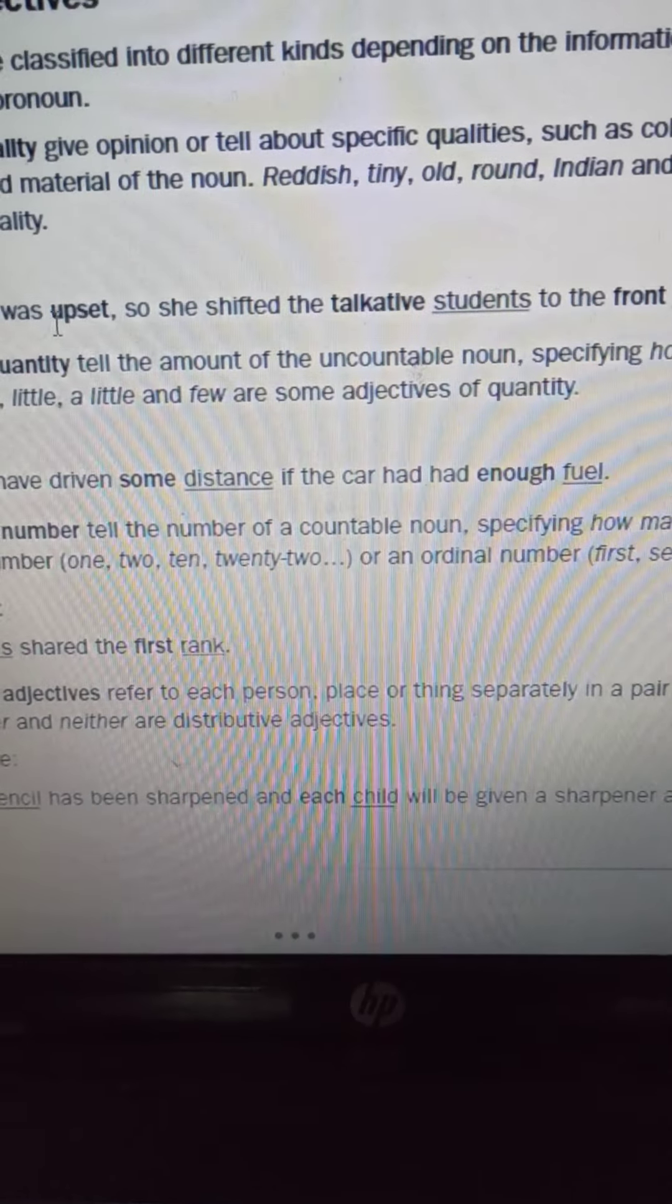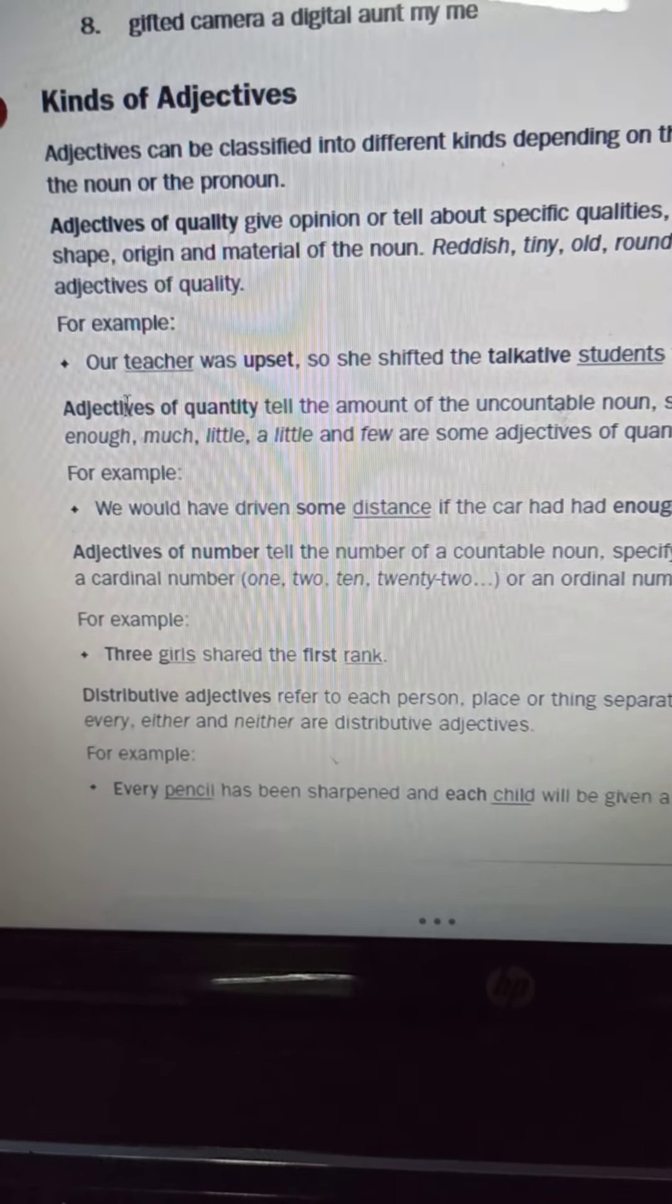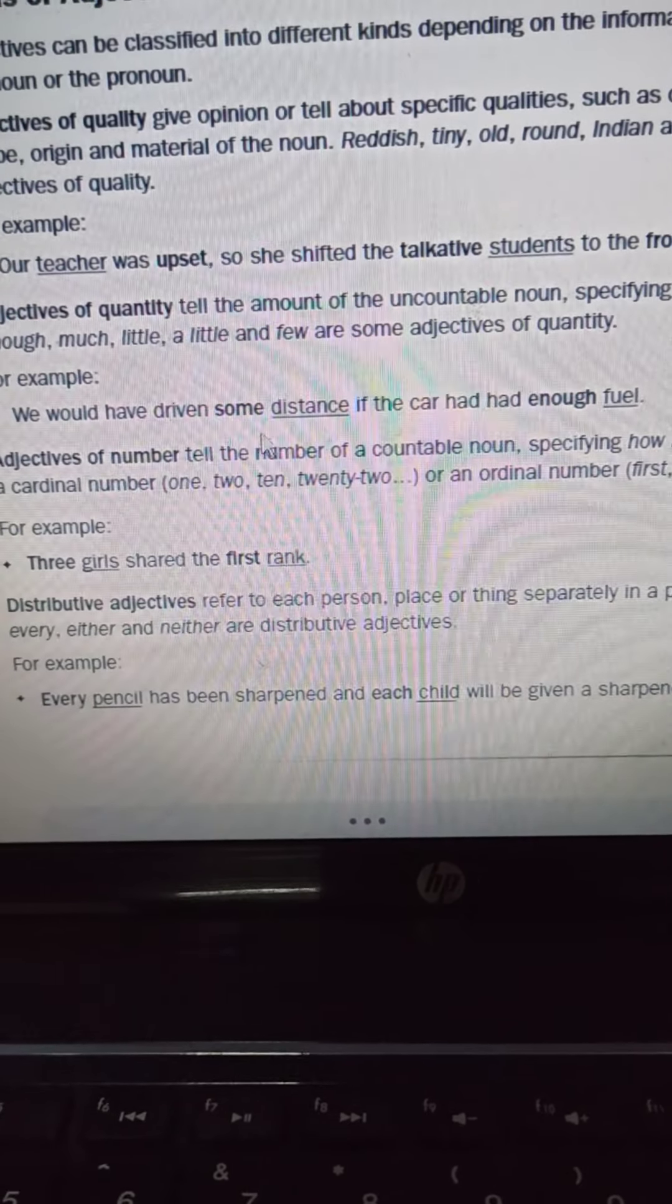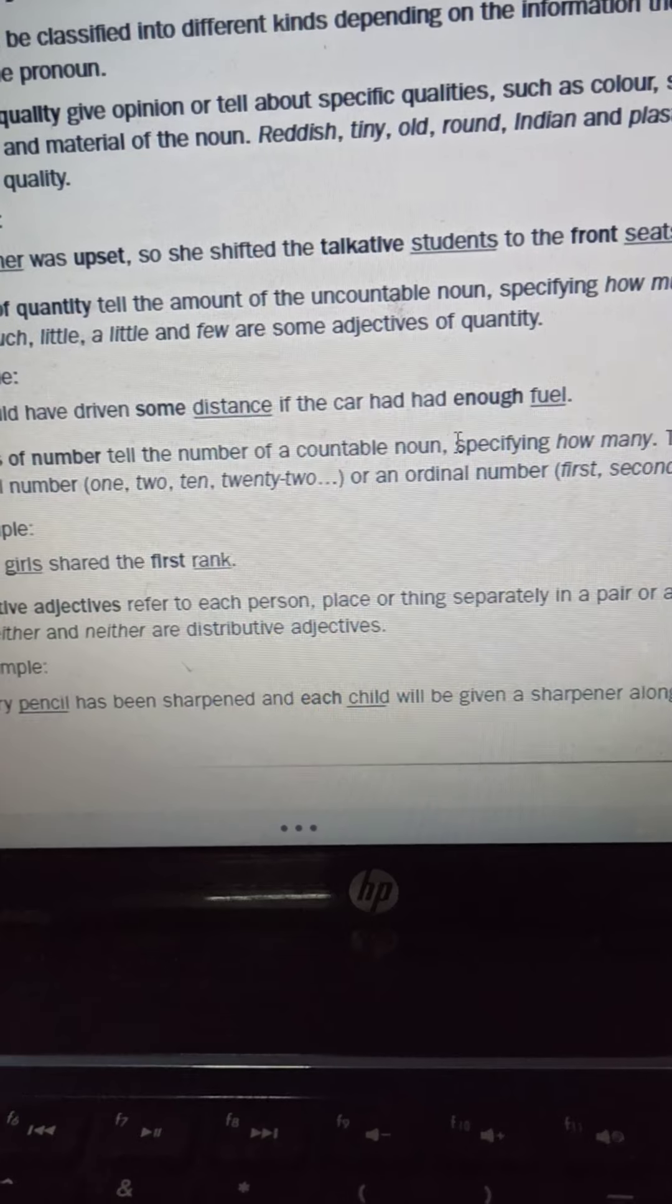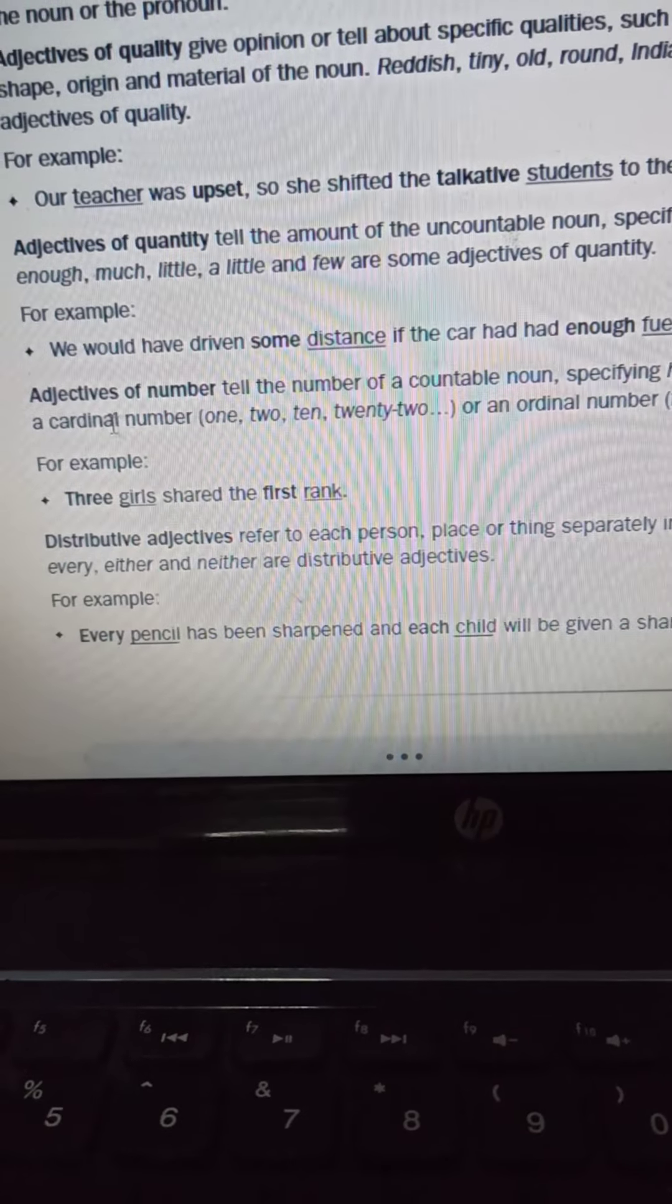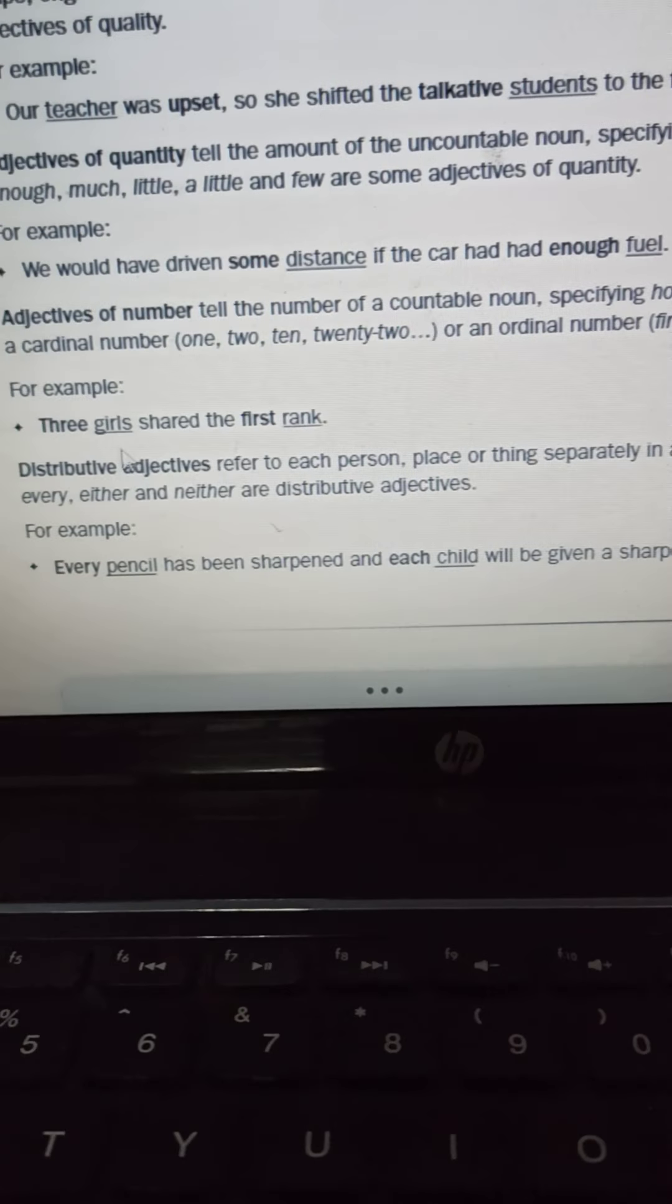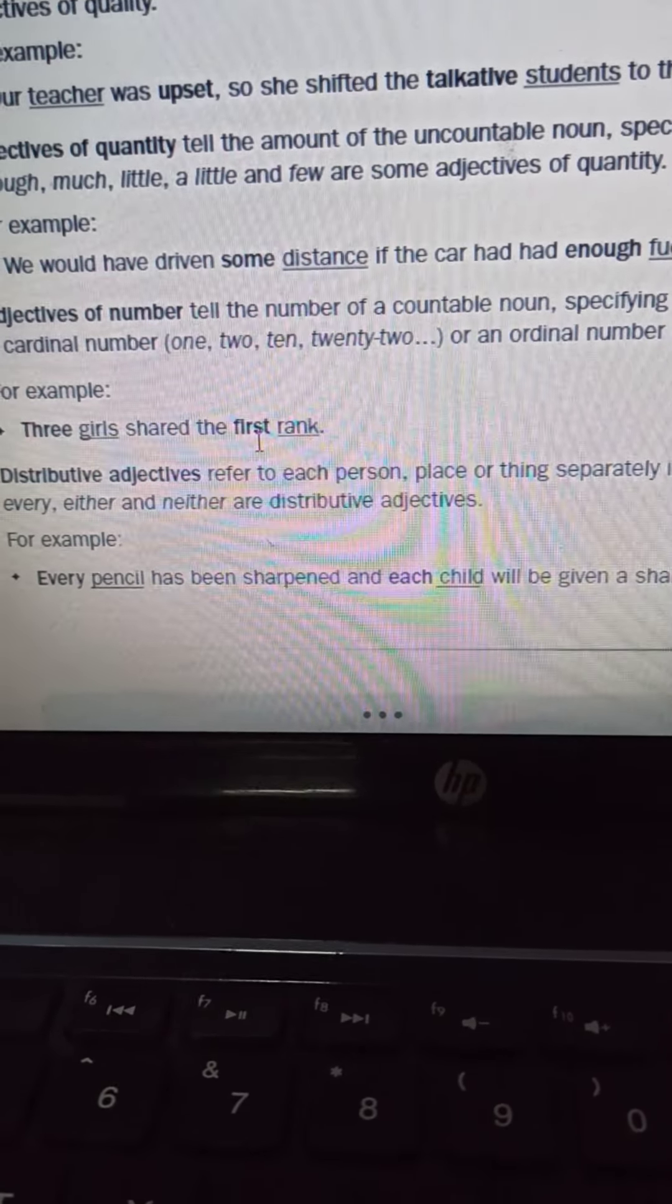Next comes your adjective of quantity. It tells the amount of the uncountable noun specifying how much. For example, we would have driven some distance in the car and had enough fuel. So some and enough, these are your adjectives of quantity which cannot be counted. Now the adjectives of number tell us about the countable noun specifying how many. For example, the girls shared the first rank. Your first is your adjective of number.